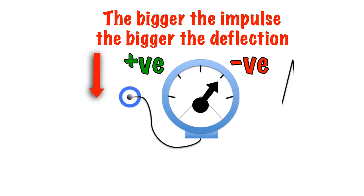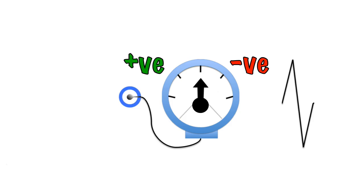If the electrode is at an angle to the impulse, it will cause both a positive and negative deflection, as the impulse moves first towards the electrode and then away from it.